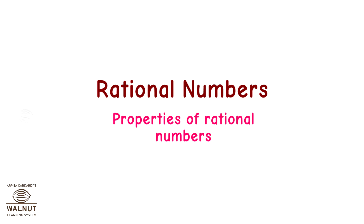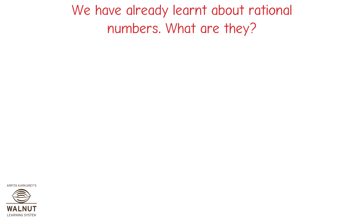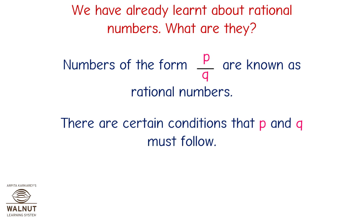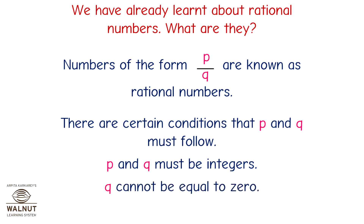Rational Numbers — Properties of Rational Numbers. We have already learnt about rational numbers. Numbers of the form P upon Q are known as rational numbers. There are certain conditions that P and Q must follow: P and Q must be integers, and Q cannot be equal to zero.